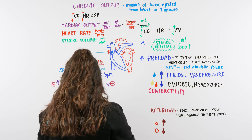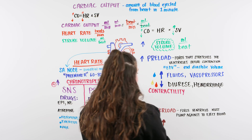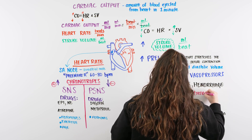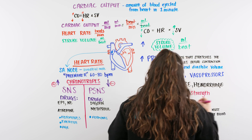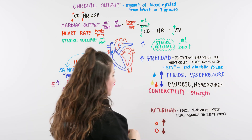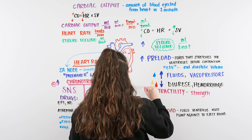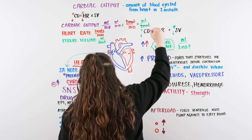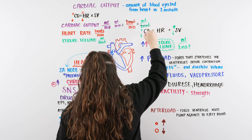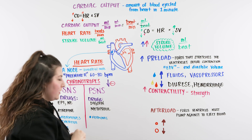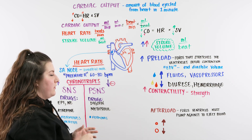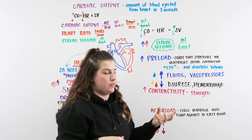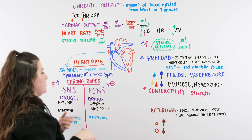Next is contractility — what does the word contractility mean? It means to contract, and that is determined by the strength. If there's an increase in strength, that means there's an increase in stroke volume and therefore an increase in cardiac output. There are different drugs we can give — positive inotropes to increase that strength and negative inotropes to decrease it. That's what we're talking about with contractility.